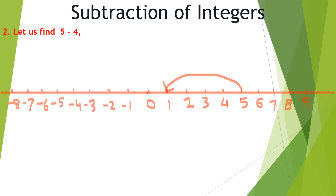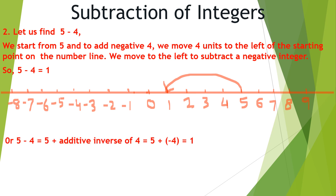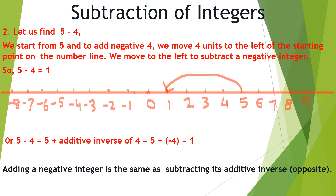Now let us find 5 minus 4. We start from 5 and to add negative 4, we move four units to the left of the starting point on the number line. We reach 1, so 5 minus 4 is equal to 1. We can also say that 5 minus 4 is equal to 5 plus the additive inverse of 4, which is equal to 5 plus negative 4, which equals 1. Adding a negative integer is the same as subtracting its additive inverse.